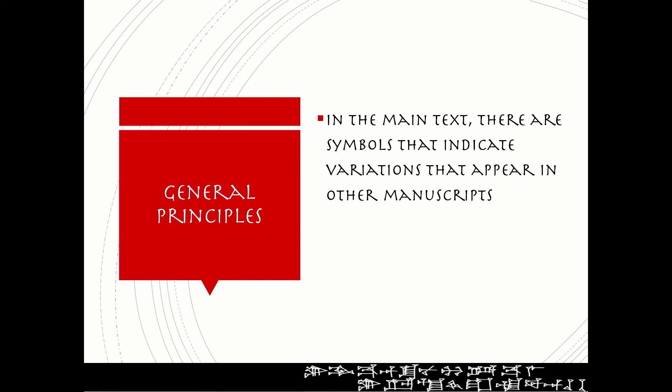In the main text there are symbols inserted that indicate variations appearing in other manuscripts. The symbols can indicate that text is omitted or added or replaced. It can also indicate that there is a varying word order with a series of words.